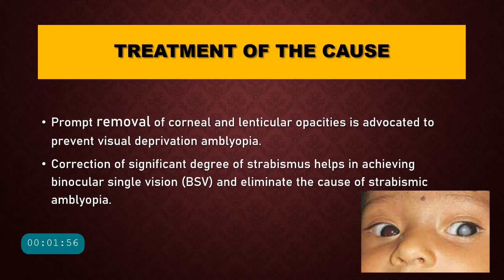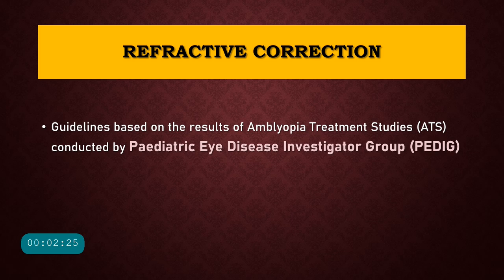The first aim is the treatment of the underlying cause of Amblyopia. If the cause is a corneal opacity, we will try to remove it. If it is a lenticular opacity like a cataract, cataract surgery should be advocated — all this is done to prevent visual deprivation Amblyopia. Similarly, in cases of squint and strabismus, strabismus surgery might help eliminate the cause of strabismic Amblyopia.